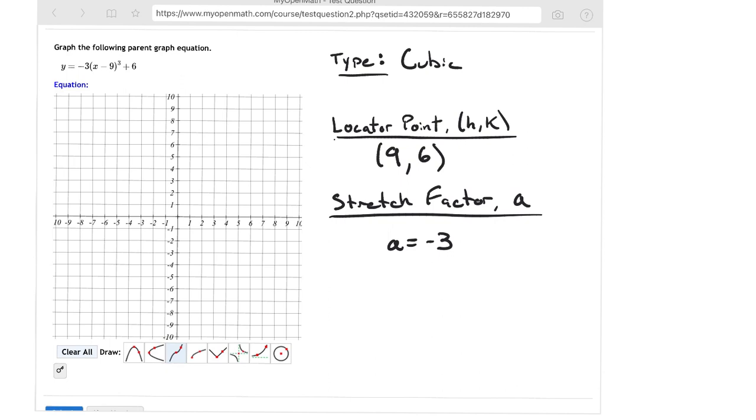So as we try to graph this, what we have to do is we first start at that locator point. So that locator point is at 9, 6, and I put my point there.